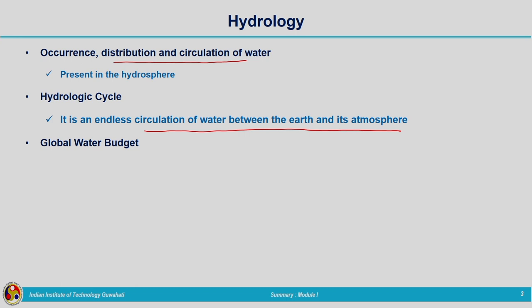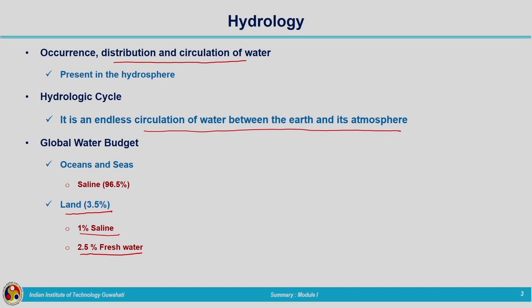For getting a quantitative idea about the total amount of water on earth we have seen global water budgeting. Around three-fourths, that is 96.5 percent of water, is in oceans and seas in saline form. The remaining 3.5 percent is on earth, and out of that 2.5 percent is fresh water — around 10.6 million kilometer cube in liquid form — which can be utilized for our requirements.